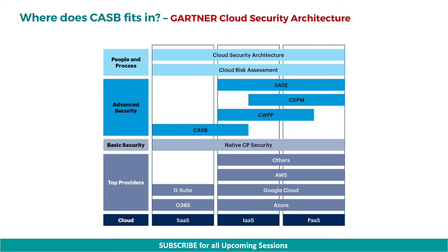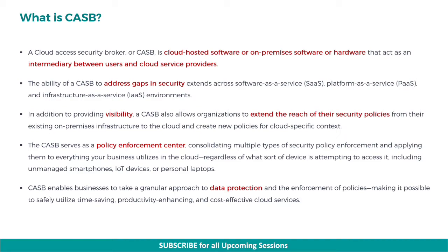First, let's see where CASB fits in overall cloud security architecture. For this we refer to Gartner Cloud Security Architecture. A cloud access security broker is cloud-hosted software or on-premises software or hardware that acts as an intermediary between users and cloud service providers. The ability of a CASB to address gaps in security extends across software-as-a-service, platform-as-a-service, and infrastructure-as-a-service environments. In addition to providing visibility, a CASB also allows organizations to extend the reach of their security policies from their existing on-premises infrastructure to the cloud and create new policies for cloud-specific context.